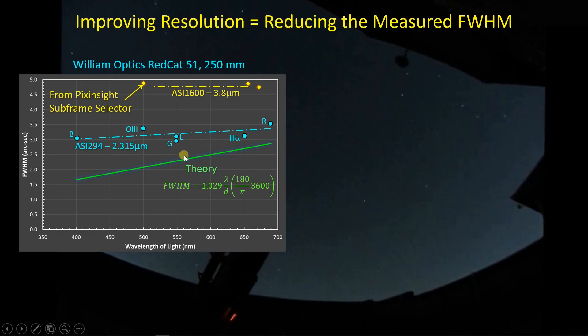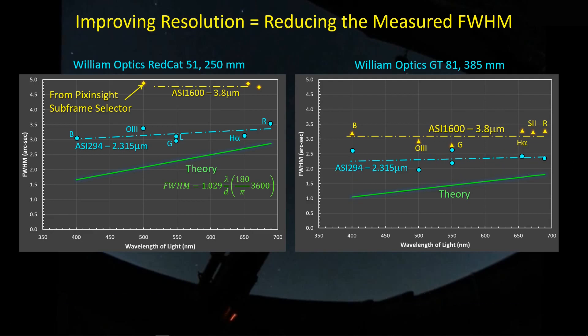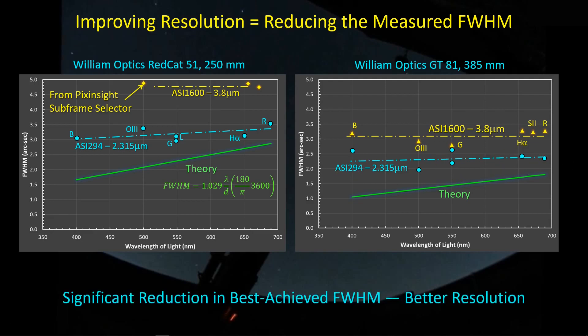The effective or measured full width at half maximum that I'm getting out of my images now is down to a level where I wouldn't expect to get much better than this. In other words, I'm getting as much resolution out of this telescope as I possibly can. With the GT-81, the story is kind of similar — I was getting much worse full width at half maximum with the ASI 1600, but with the ASI 294 I've dropped this line down significantly. BIN-1 mode is really helping me out with the resolution for these two telescopes.